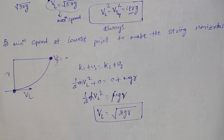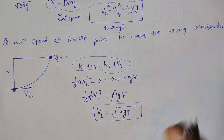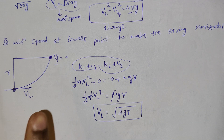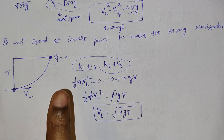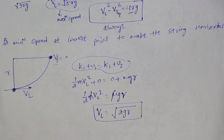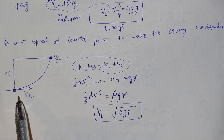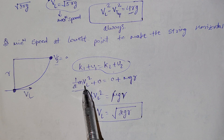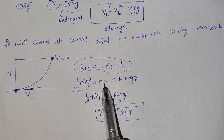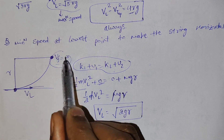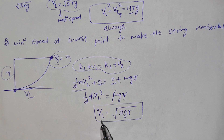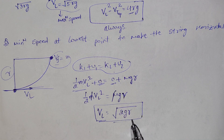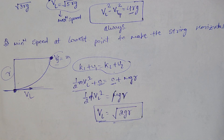We apply conservation of mechanical energy. Gravity is a conservative force, so we can apply conservation of mechanical energy. Initial kinetic energy is (1/2)mv² at the lowest point, initial potential energy is zero, final velocity is zero, final kinetic energy is zero, and final potential energy is mgh where h=r. Solving gives lowest point velocity as root(2gr).